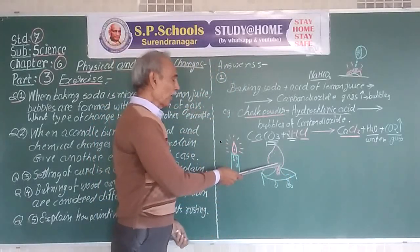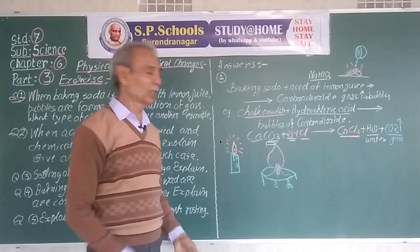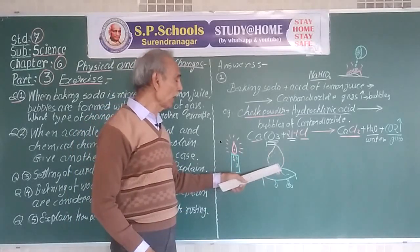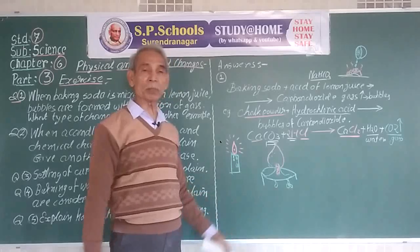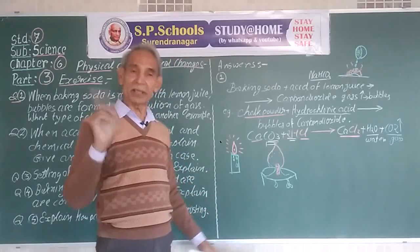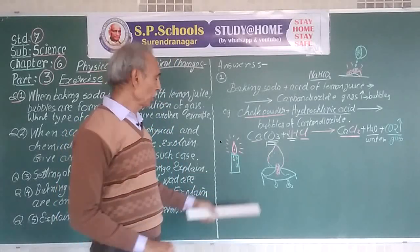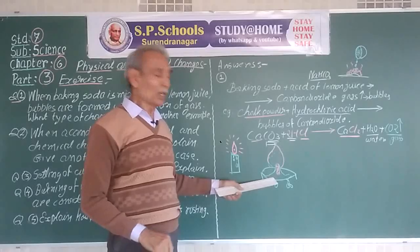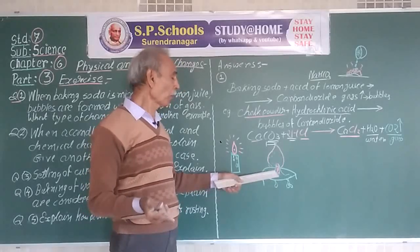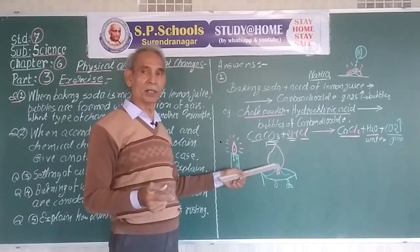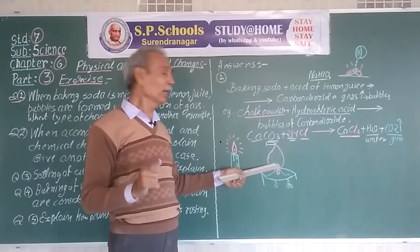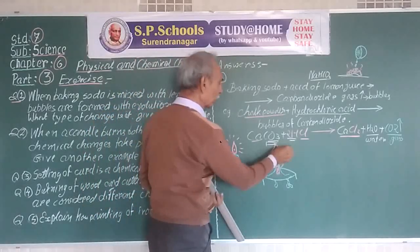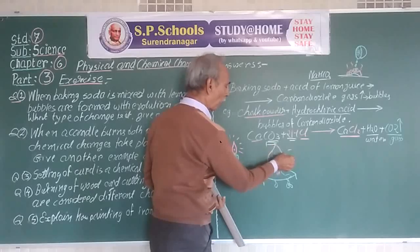When the wax burns, it turns from liquid into gaseous form, and then it burns. So the wax on heating turns from solid to liquid, from liquid to gas, and then it starts burning with the help of oxygen in the air.